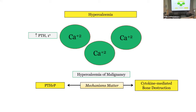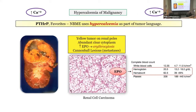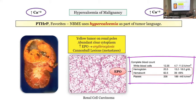For PTH-related protein as a cause of hypercalcemia, hypercalcemia is part of tumor language. Starting with renal cell carcinoma: it's a yellow tumor on the renal poles, with abundant clear cytoplasm — clear cell carcinoma. Know this image. The other paraneoplastic syndrome with renal cell carcinoma is increased erythropoietin, causing elevated hemoglobin and hematocrit.